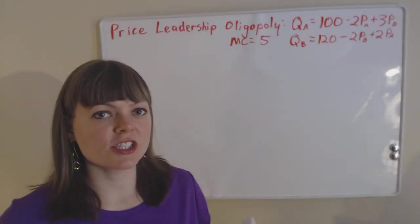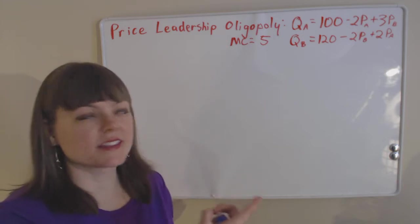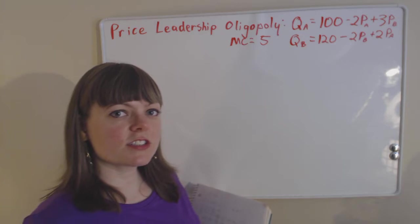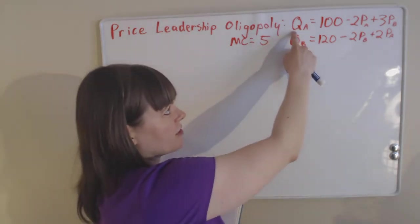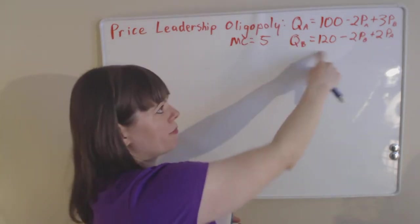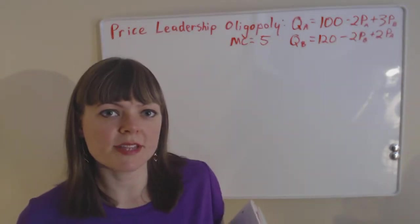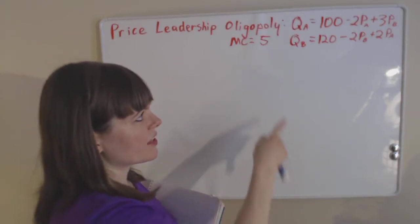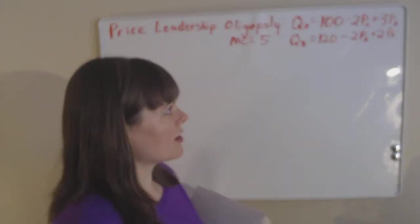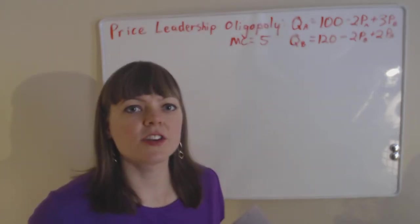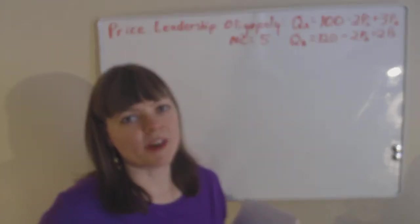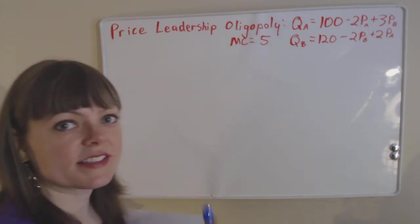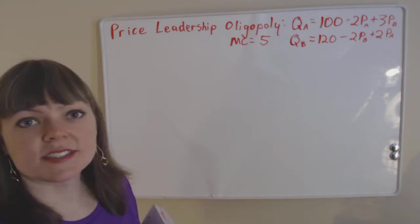I'm going through a price leadership oligopoly — or duopoly in this case, because there's only two firms. The demand functions are given: the demand function for firm A is up here, the demand function for firm B is here, and both firms have a marginal cost of production of $5 per unit. The demand functions are different between the firms — they're not symmetric — and that's okay because sometimes firms are better advertisers or have other reasons why their demand function might differ. That's allowed in a price leadership situation.